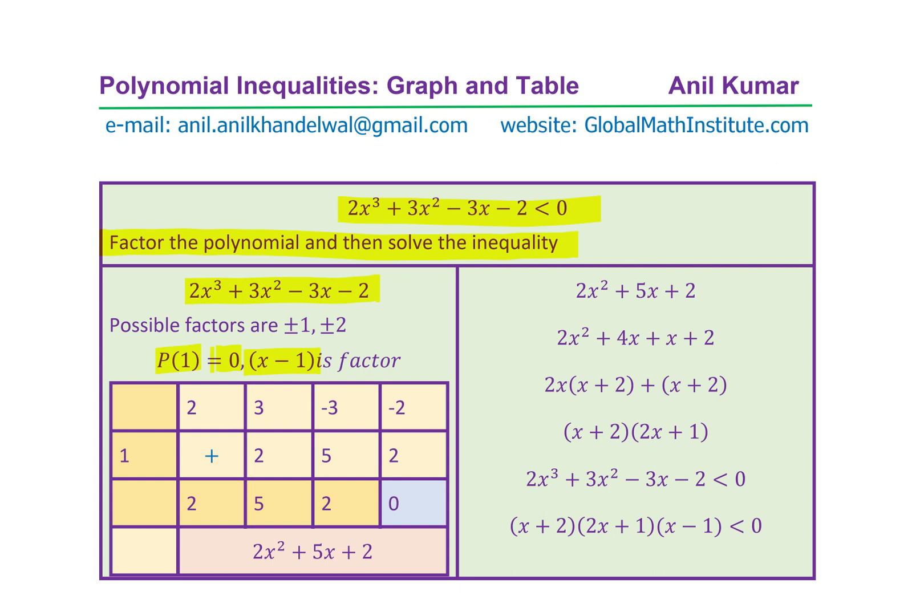So that means x - 1 is a factor. Now this time, I am showing you synthetic division. The same long division which we did could also be done in a short form. Writing the coefficients, which are 2, 3, -3, and -2, dividing by 1, we have our solution. So we'll bring down 2, multiply by 1, write down, add them up, and then repeat the process. Zero is the remainder.